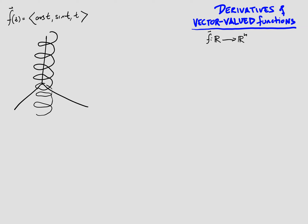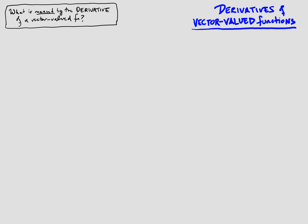We often think of the graph of a vector-valued function, which is some kind of a curve, as being traced out by a moving point in time — which is why we often use t as our parameter. This brings us to our main question for this lecture: what is actually meant by the derivative of a vector-valued function? Not how do you compute it, but what does it mean? That's obviously much more important.